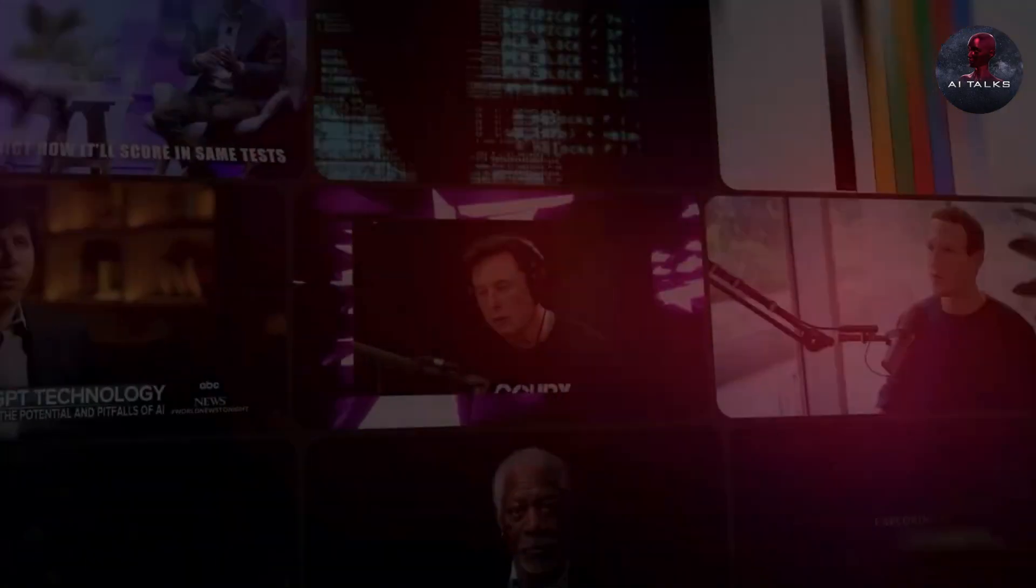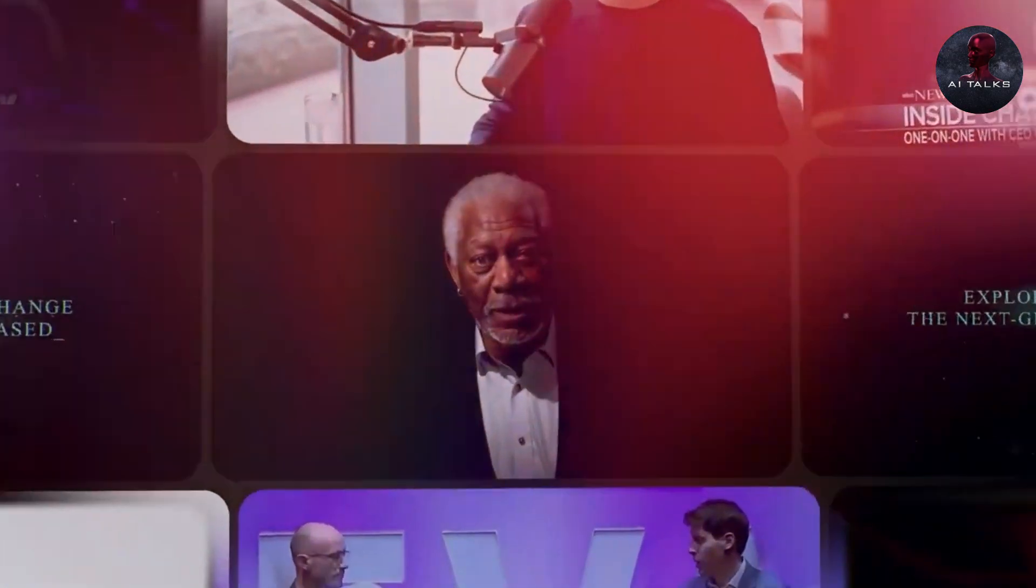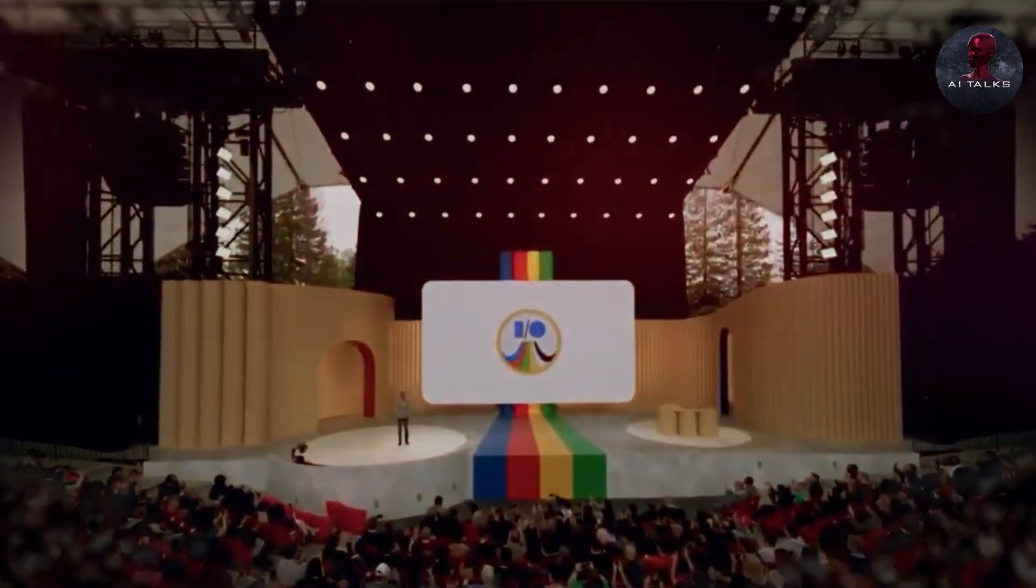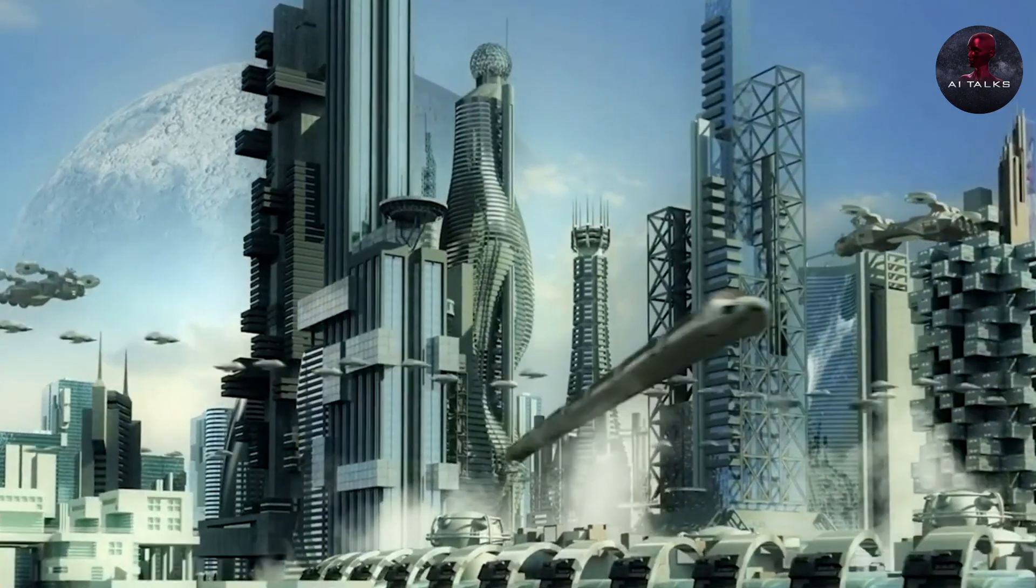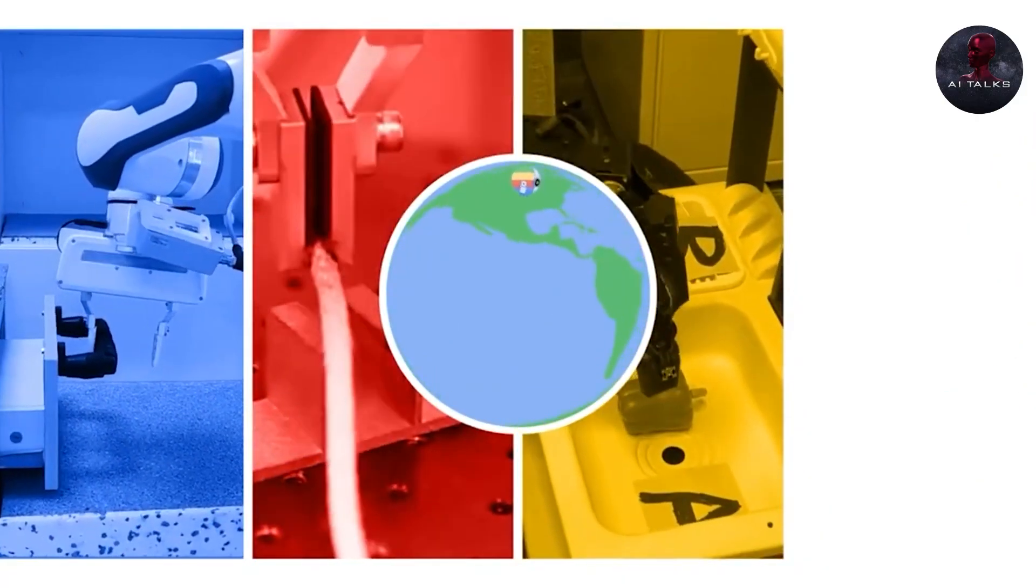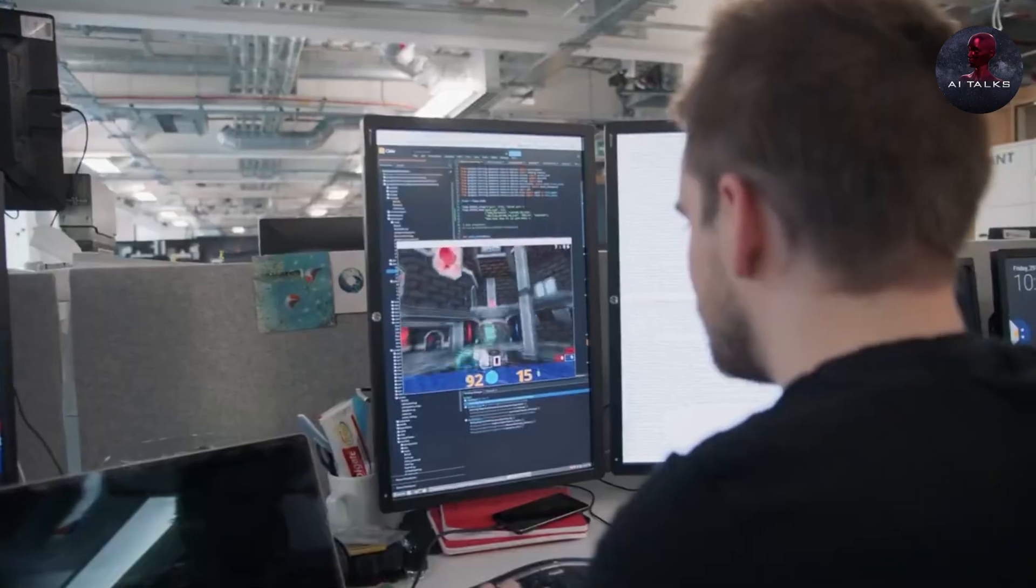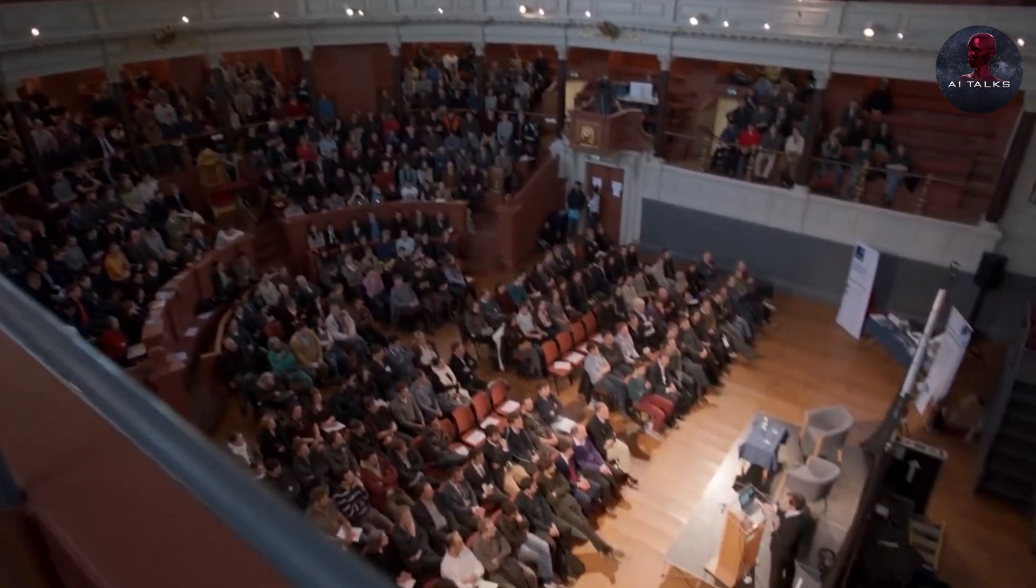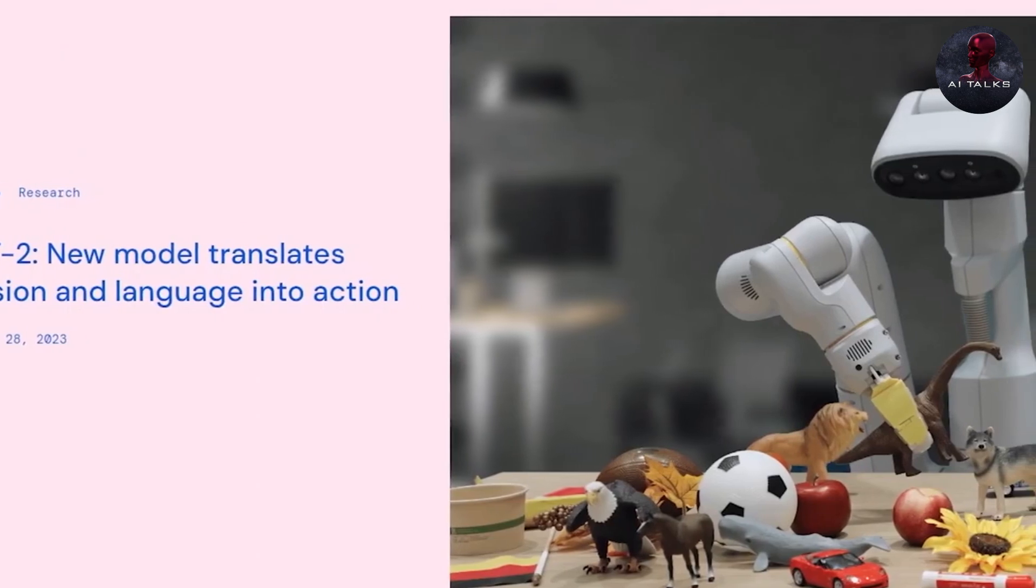In evaluations, RTX models rapidly acquired new abilities. For instance, RT2X demonstrated detailed spatial reasoning, knowing the difference between placing an object near versus on top of another. Such nuanced understanding brings us closer to adaptable general-purpose robots.